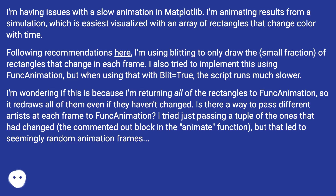I'm wondering if this is because I'm returning all of the rectangles to funcAnimation, so it redraws all of them even if they haven't changed. Is there a way to pass different artists at each frame to funcAnimation? I tried just passing a tuple of the ones that had changed — the commented-out block in the animate function.